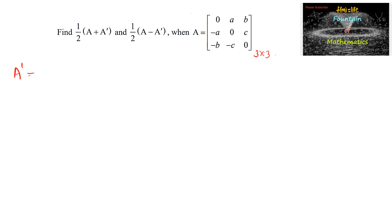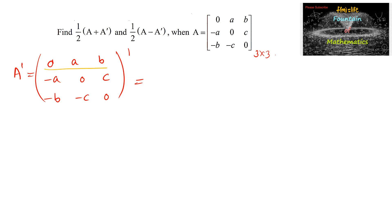Let us find Aᵀ. The transpose of A is computed by turning rows into columns. The first row becomes the first column: 0, A, B. The second row becomes the second column: negative A, 0, C. The third row becomes the third column: negative B, negative A, and 0.